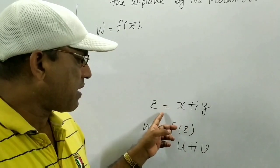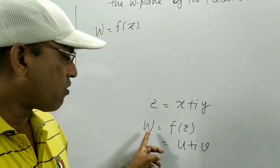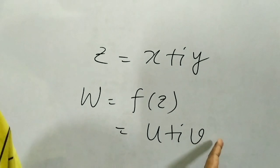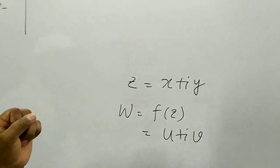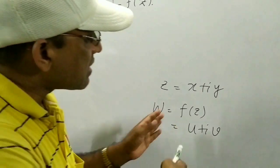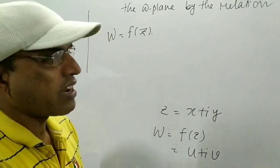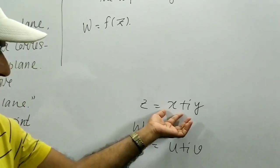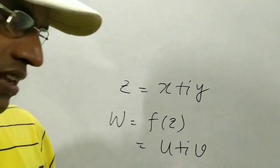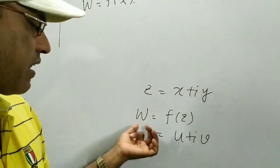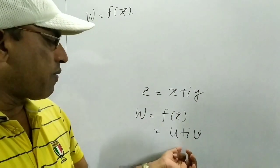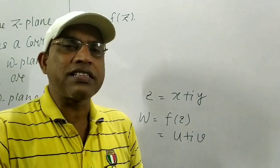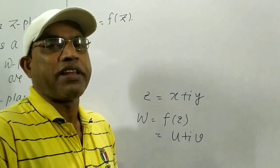The z-plane has coordinates x and y, and the w-plane has coordinates u and v. Our main discussion is: what is the transformation? One figure is given in the z-plane, and we get another figure in the w-plane. Ultimately the figure will be changed — this is our main discussion.